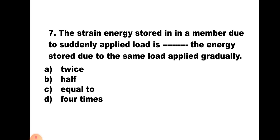Question number 7: The strain energy stored in a member due to a suddenly applied load is __ the energy stored due to the same load applied gradually. A. Twice, B. Half, C. Equal to, D. Four times. The stress due to sudden load is twice that due to gradually applied load. For energy, the formula is σ²·A·L / 2E — so as stress is twice, the square of 2 gives four times. Hence, the energy stored due to sudden load is four times that stored due to gradually applied load. The correct answer is D. Four times.